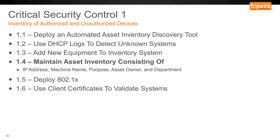Using an automated asset inventory discovery tool is key — you don't want to do this manually. Pulling data from DHCP will leave you blind to anyone on the environment with a static IP address. Adding equipment manually to an inventory system can mean things get lost or overlooked when deploying new hardware. 802.1X is a very good tool if you're worried about keeping rogue devices off your network, but it can be very difficult to implement.